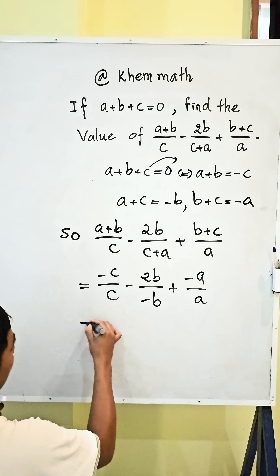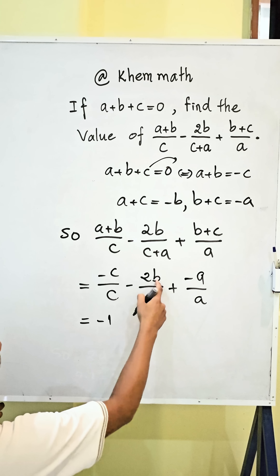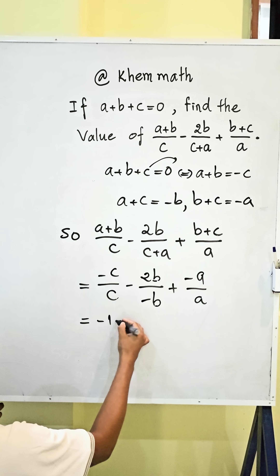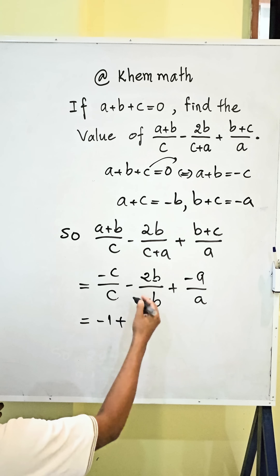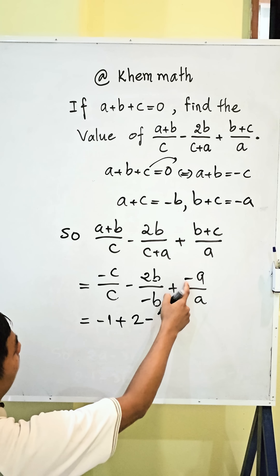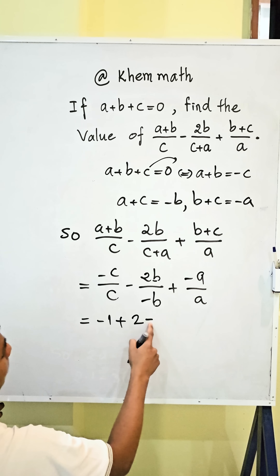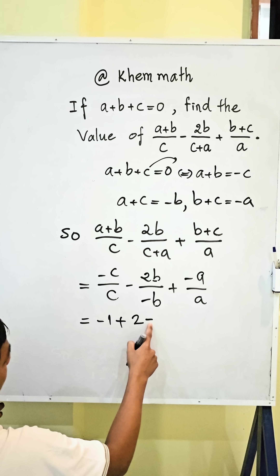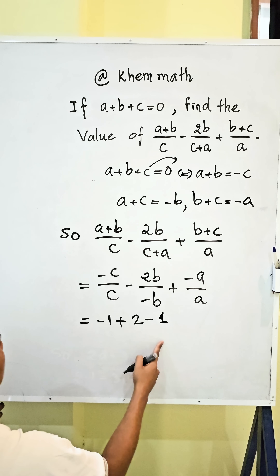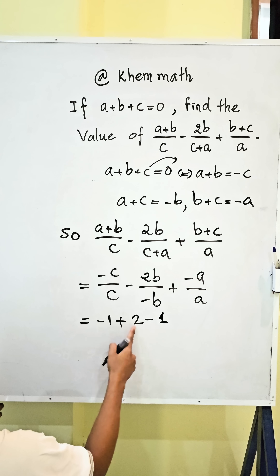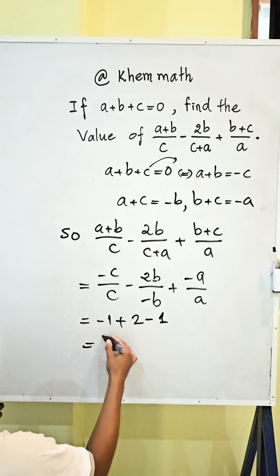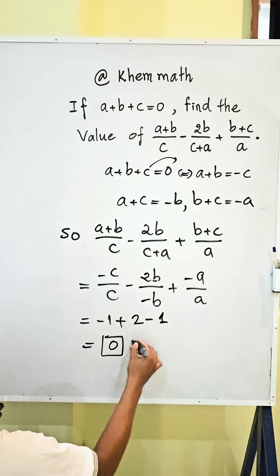We simplify: negative c over c gives negative one. Negative b over negative b gives positive two. Negative a over a gives negative one. So negative one plus two minus one equals zero. Zero is our answer.